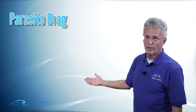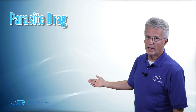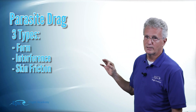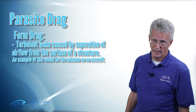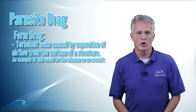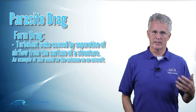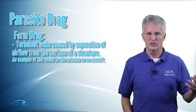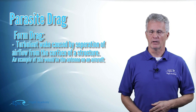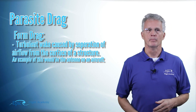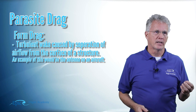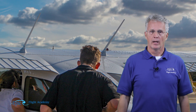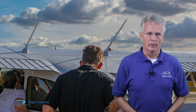Parasite drag has three types. The first is form drag. Form drag is a turbulent wake caused by separation of airflow from the surface of a structure. Let's simplify that — think of things like the antenna mounted to the airplane. These cause form drag.